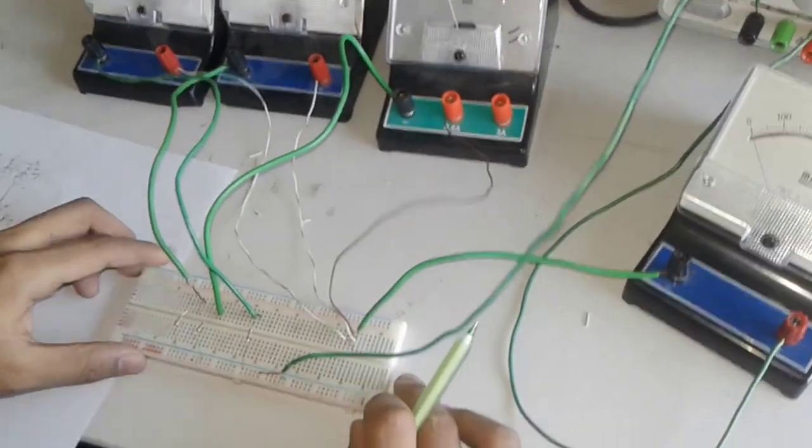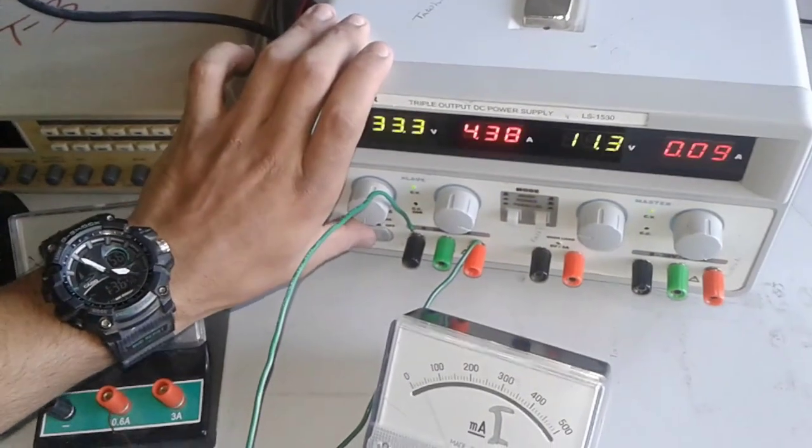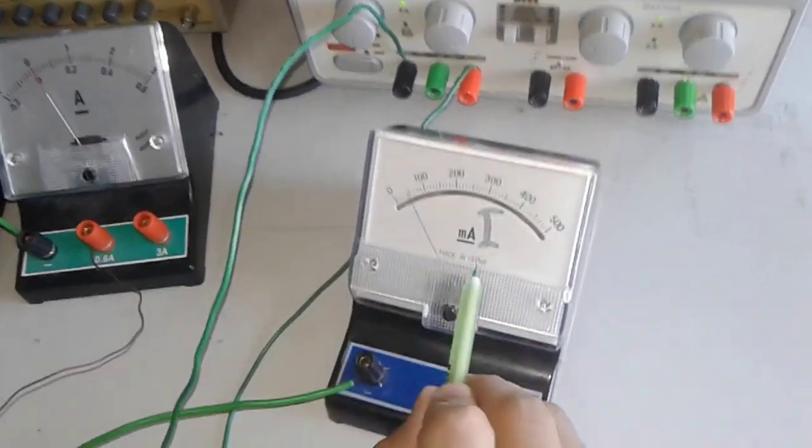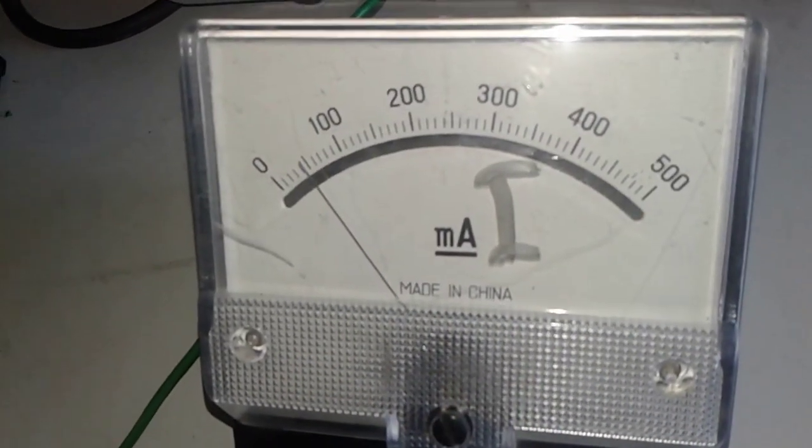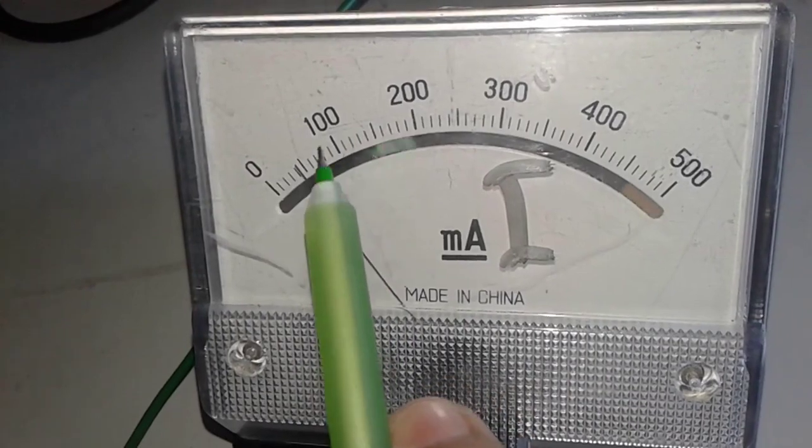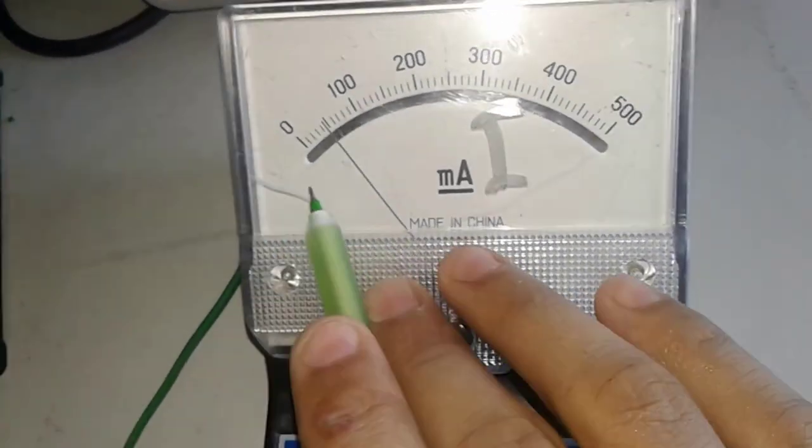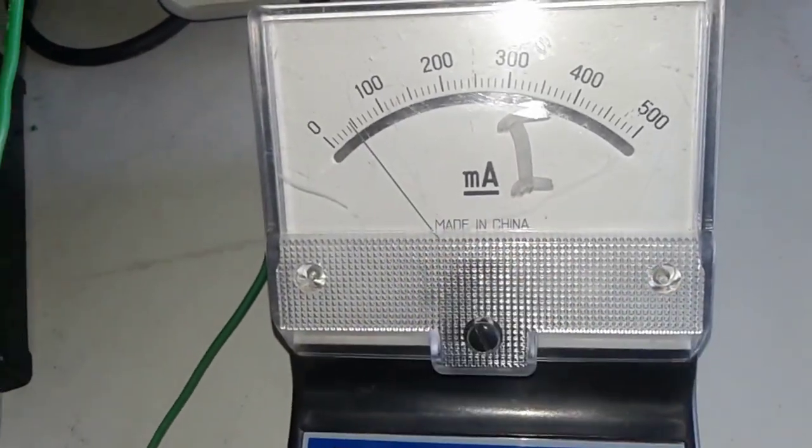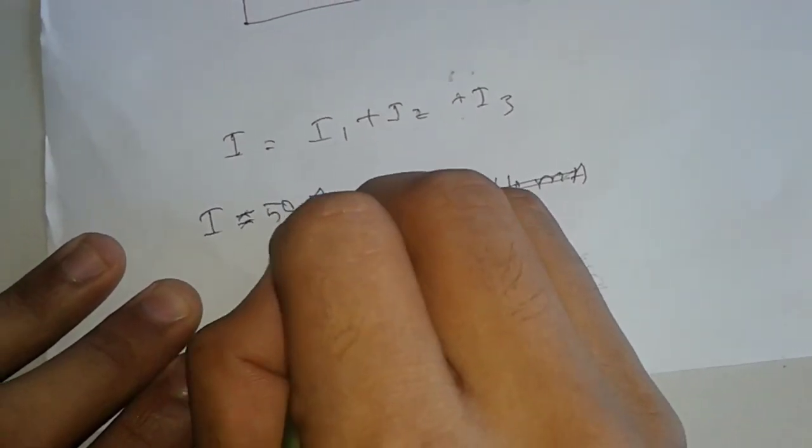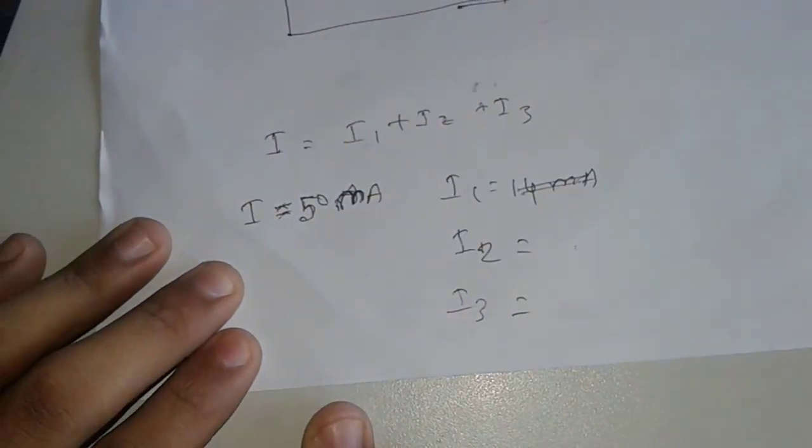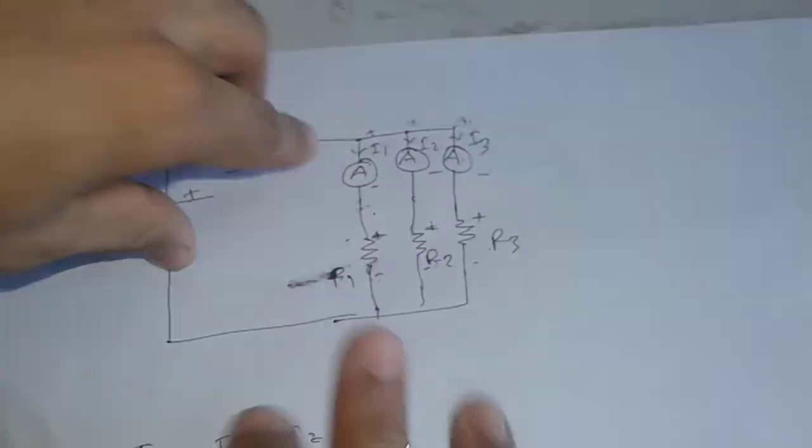So, now we will see how to prove this. First, we have to do the supply. The total current is on the ammeter. The total current is on the ammeter. Then individually I1, I2 or I3 we will be able to check in.